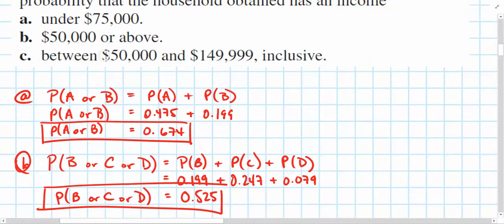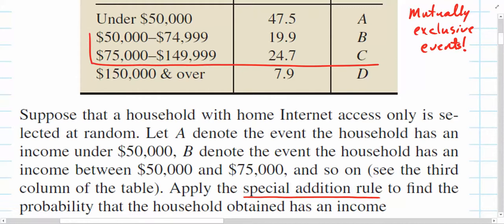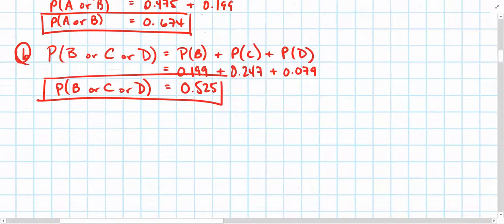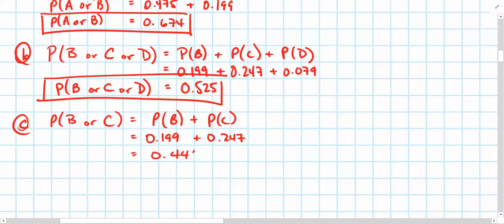And lastly, between $50,000 and $149,000 inclusive. Well, this time we're only looking at event B, or C. So, what are the chances that I pick a family that falls in event B, or C? So, it might look this way when we write it up. Probability of B, or C, is equal to the probability of B, plus the probability of C. Since these are mutually exclusive. And probability of B was 0.199. Probability of C was 0.247. And that sums to 0.446, I believe.